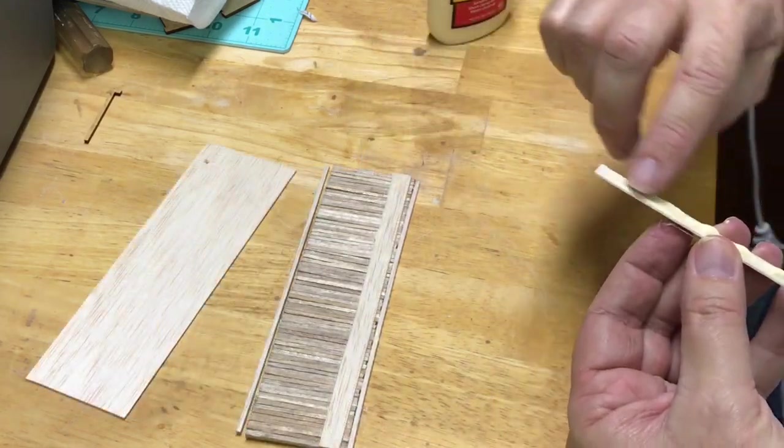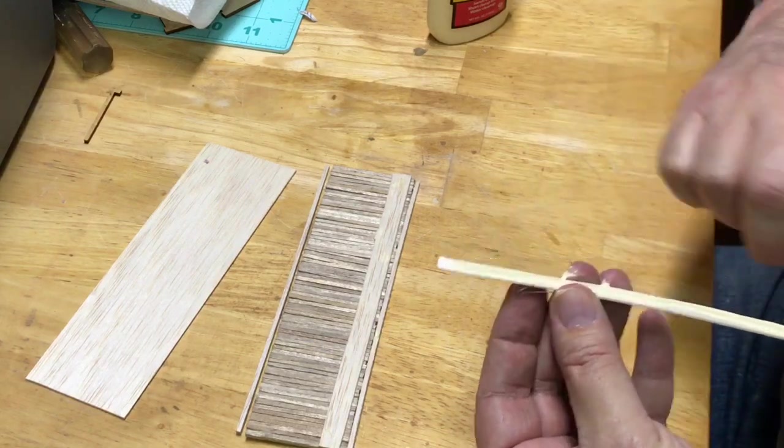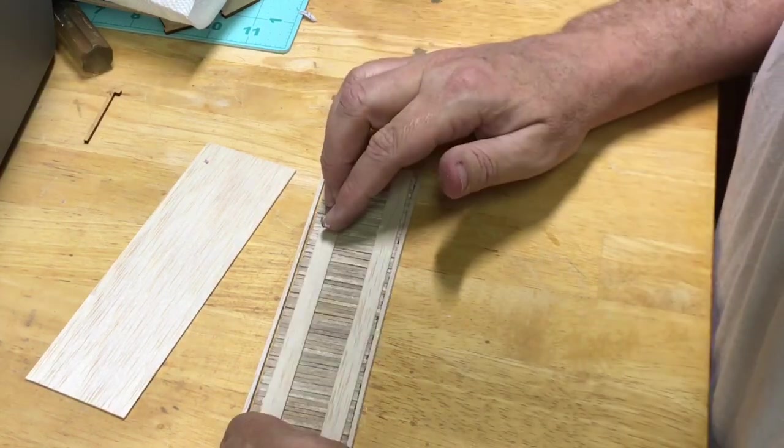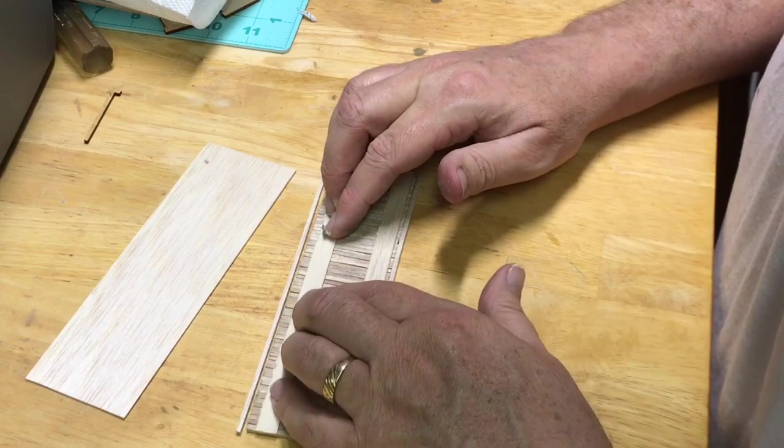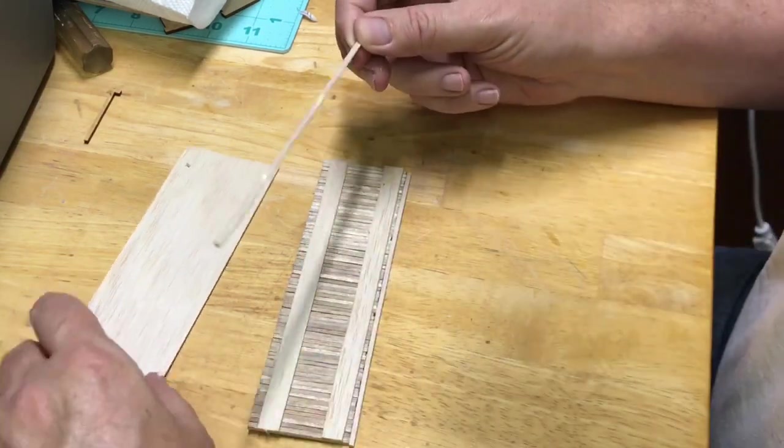I have found that the easiest way to apply glue to the wood is to just use my fingers. It's a little bit messy but is a great alternative to using a brush.